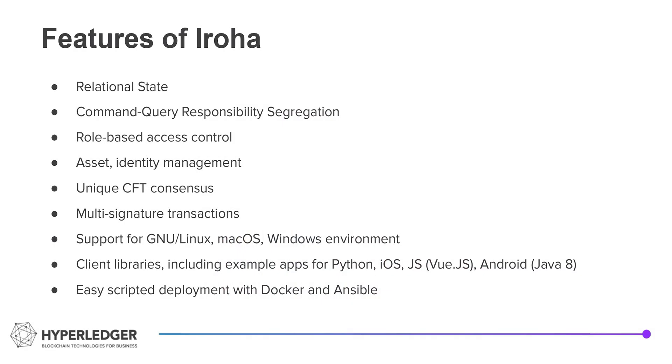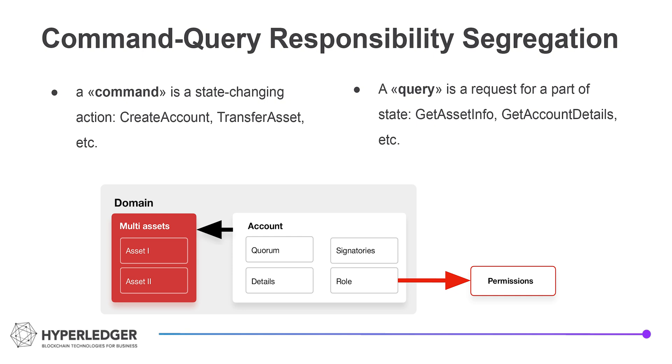Let's have a look at some of the features of Iroha. One of the main and unique great features is a relational database backend that is accessed by commands and queries. A command is a simple change of state, and commands are grouped into transactions that are executed automatically and can themselves form batches. A query is a request for some part of this state.